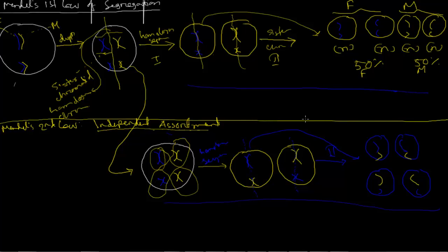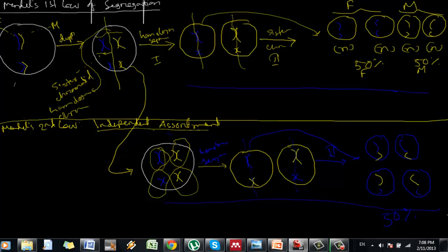For independent assortment, there is a 50% chance of getting a mixed population and a 50% chance of getting the parental population — that is 25% from father and 25% from mother — and the remaining 50% is mixed population. Thank you.